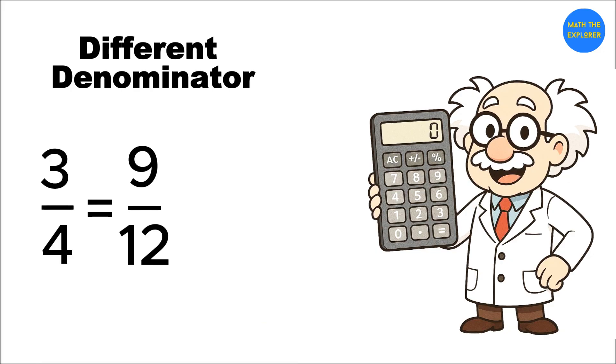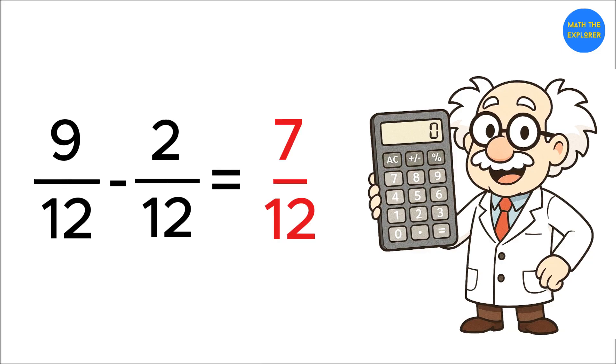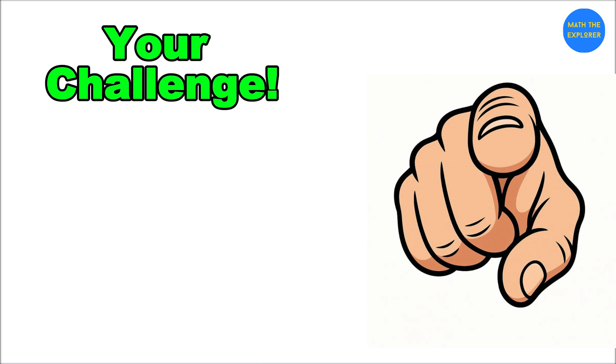Step three: subtract. 9/12 - 2/12 = 7/12. Your challenge: what's 7/10 - 2/5? Pause and think. Answer: 3/10.